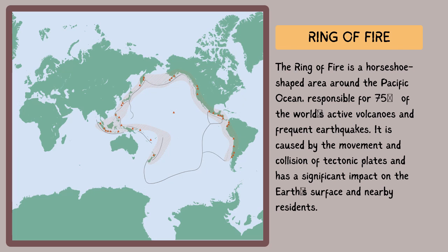The tectonic plates along the Ring of Fire are dynamic, interacting through subduction zones where one plate is forced beneath another. This subduction process often leads to the formation of deep sea trenches, volcanic arcs, and volcanic chains. Notable features include the Andes in South America, the Cascade Range in North America, the Japan Archipelago, and the Philippines. The intense geological activity makes it a geologically dynamic and potentially hazardous area.